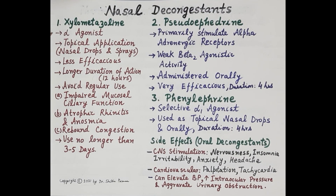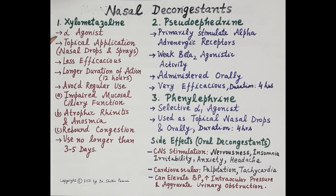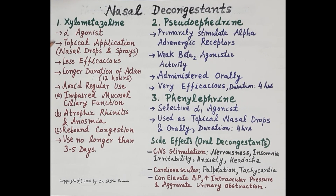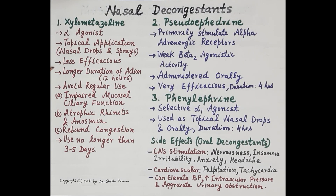The first decongestant is xylometazoline, which is an alpha agonist and therefore causes constriction of nasal blood vessels, acting as a nasal decongestant. It is meant for topical application and is used as nasal drops and nasal sprays. Compared to pseudoephedrine and phenylephrine, xylometazoline is less efficacious; however, it has a longer duration of action of 12 hours.